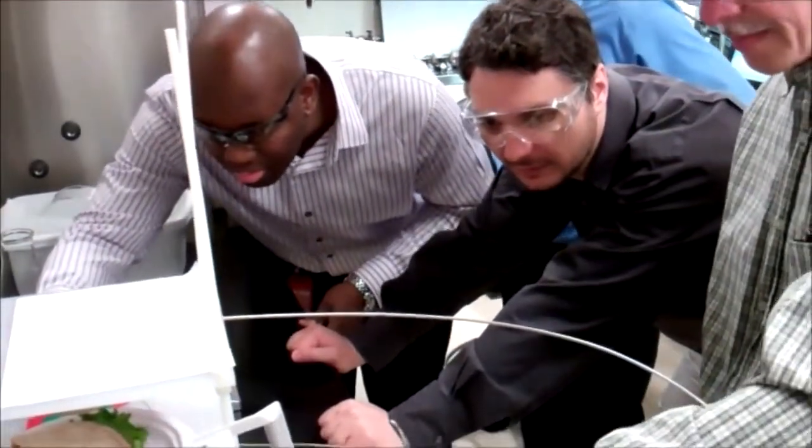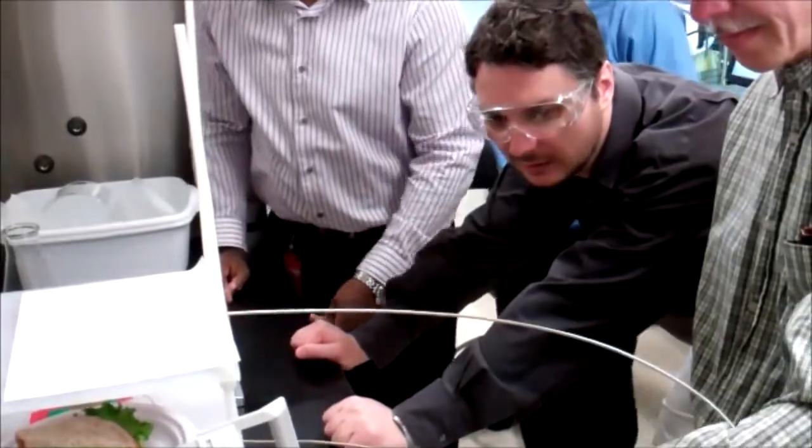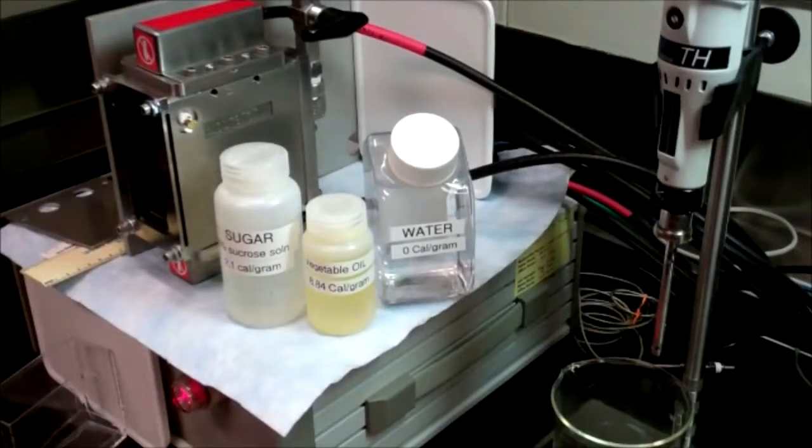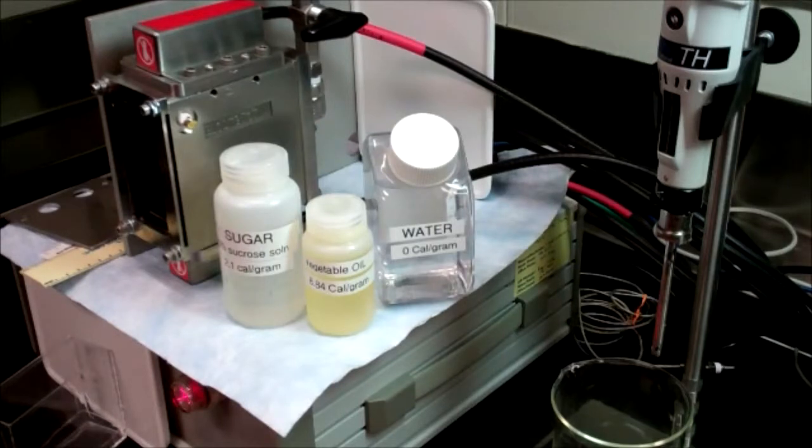It measures fat and water content to get to the total calorie count. The device assumes the rest of the food, whether it be protein, sugar or carbs, has a predefined number of calories and lumps them all together.